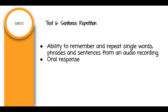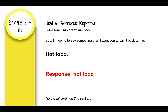Test 6: Sentence Repetition. This subtest measures the ability to remember and repeat single words, phrases, and sentences from an audio recording. An oral response is required. This test measures short-term memory. Say, 'I am going to say something. Then I want you to say it back to me. Hot food.' The child will then respond 'hot food.' No partial credit is available; they must respond with the exact words prompted.